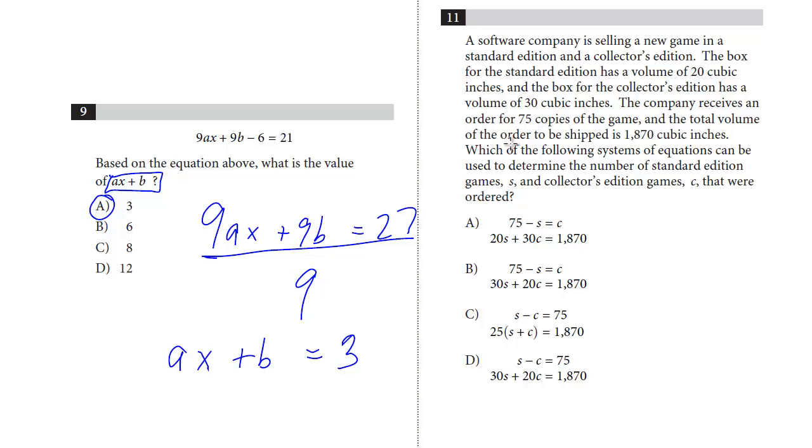The total volume for the order to be shipped is 1870 cubic inches. Which of the following systems of equations can be used to determine the number of standard edition games S and the collector's edition games C that were ordered? This is a common question as well. You don't have to solve it. We just have to set up the two systems of equations.